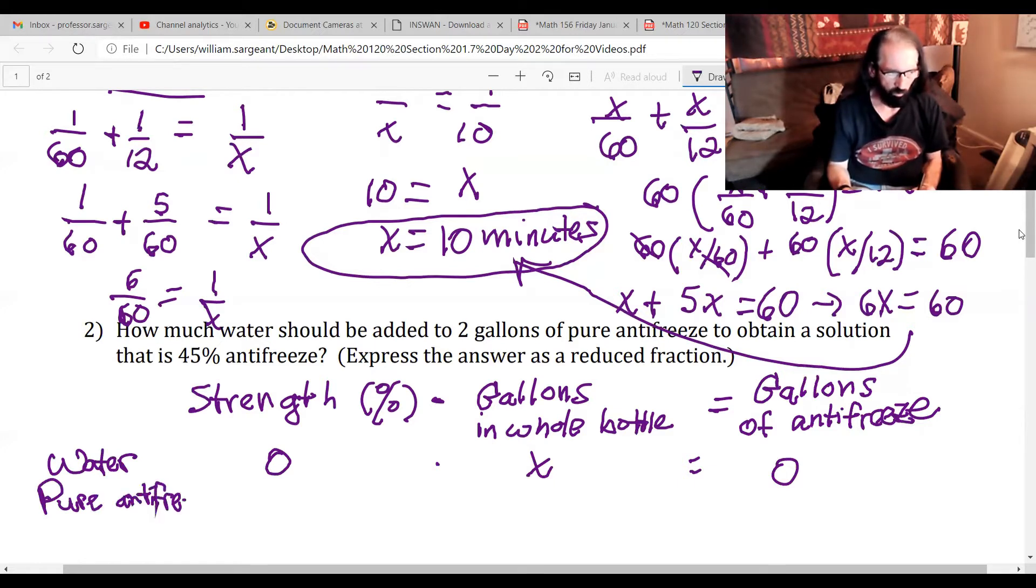Pure antifreeze is 100 percent which is equal to one as a decimal, and we know the amount we have of it is two gallons. One times two is two.